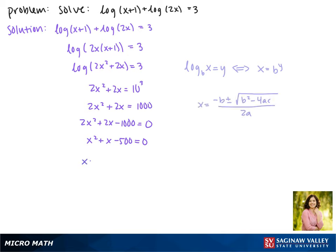This gives us x equals negative 1 plus or minus the square root of 1² minus 4 times negative 500 times 1, all divided by 2 times 1. Skipping a few steps, this gives us x = (-1 ± √2001) / 2.